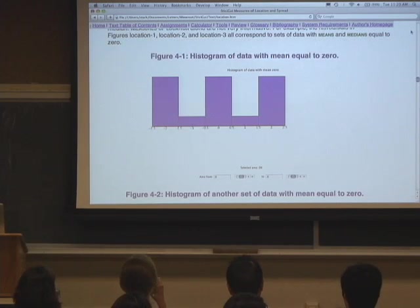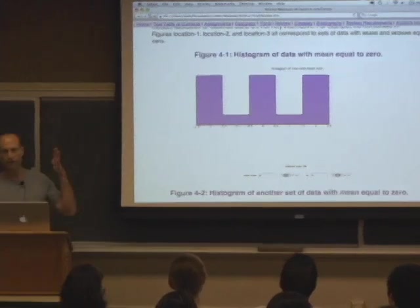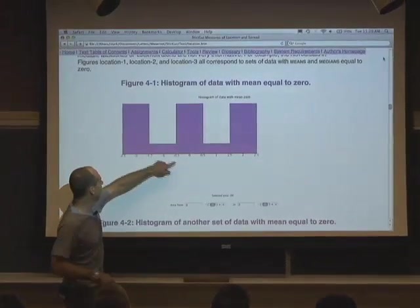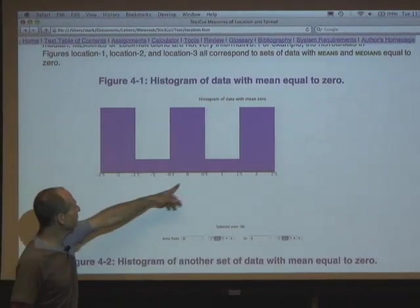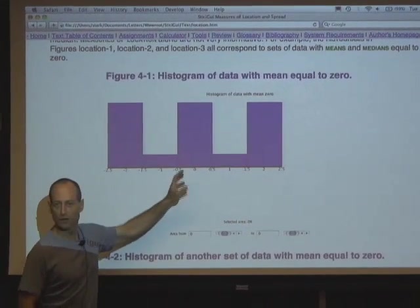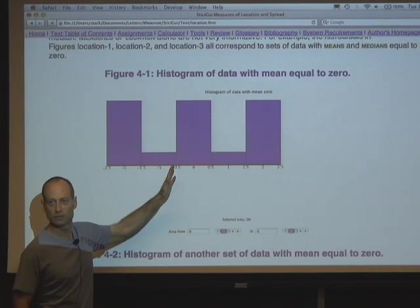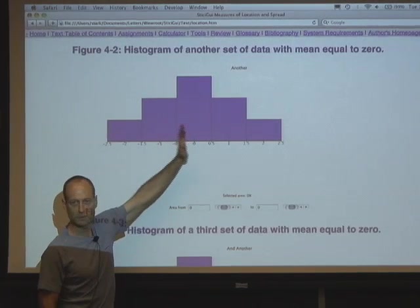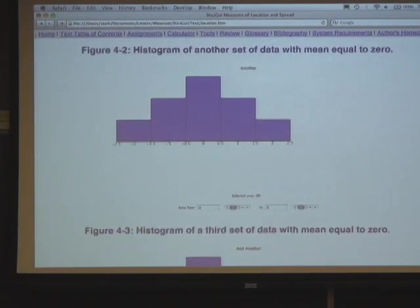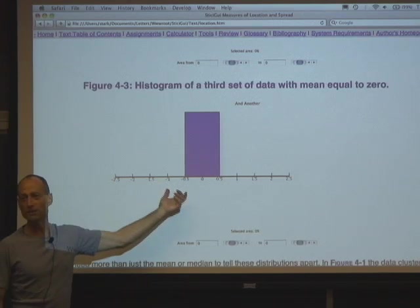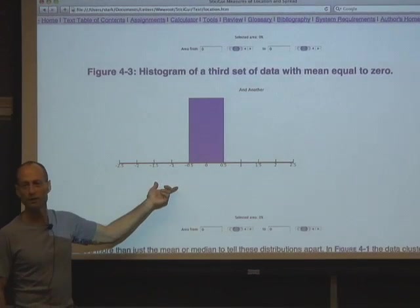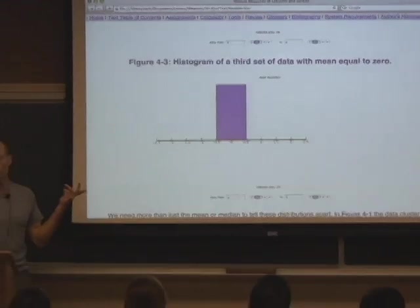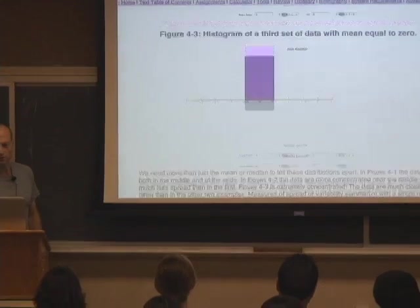Here are histograms of three different fictitious data sets that all have mean and median equal to zero. The first has modes at minus two, zero, and two — the numbers are spread out. The second has the same mean of zero but the distribution looks very different. The third has all numbers equal to zero — least spread out of all. They all have the same mean; you couldn't tell them apart from just that single number. We need a measure of how spread out the histogram is.